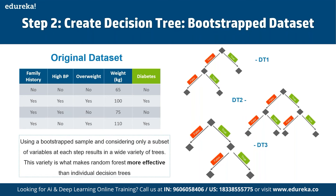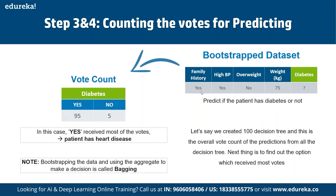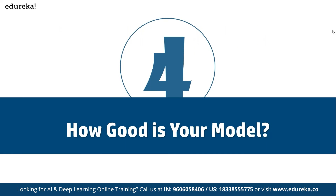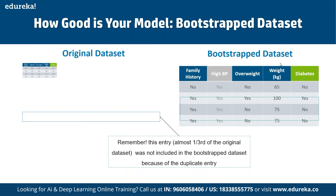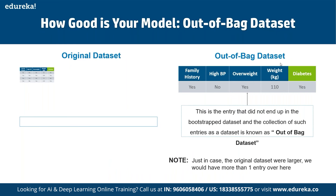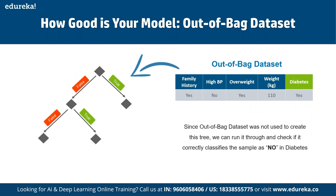This variety of trees is what makes random forest more effective than individual decision trees. To use the random forest, we predict whether a patient has diabetes. If 'yes' receives the most votes across all trees, the patient has the condition. For example, if we created 100 decision trees, we count predictions from all trees and find the option with the most votes. About one-third of the original data set is not included in the bootstrap data set due to duplicate entries — this is known as the out-of-bag data set.